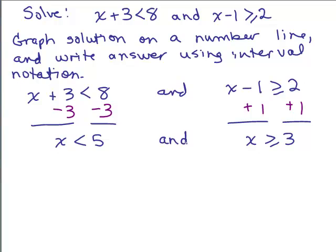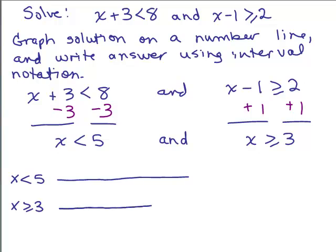Now what we want are solutions that make both true. There are a lot of numbers where x is less than 5 and a lot of numbers where x is greater than or equal to 3. We want to find a solution that works in both. One way of doing it is to graph each of them and look at the overlap. If I graph x less than 5 and x greater than or equal to 3 on the same number line, I know I need markings at both 3 and 5, so let's say that's 5, that's 3, that's 1, that's 7, etc.